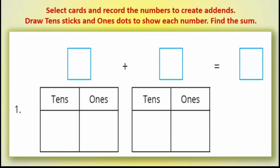Select cards and record the numbers to create addends. Draw 10's sticks and 1's dots to show each number. Find the sum — كلمة the sum هنا يعني المجموع. الكاردز دي بيبقى عليها digits مترقمة من 1 لـ9، وبنستخدمها عشان نضيفهم على بعض ونشوف النواتج. النهاردة بنتكلم في 2-digit numbers، يعني أعداد مكونة من رقمين، فممكن أستخدم بطاقة في خانة الـones وبطاقة في خانة الـtens.